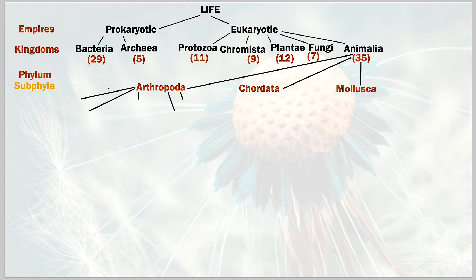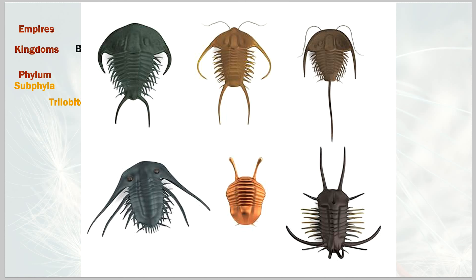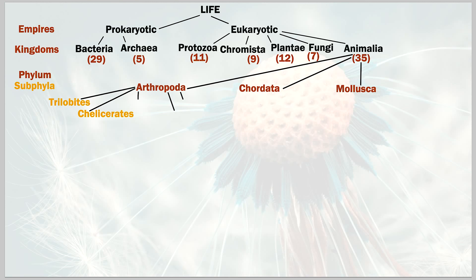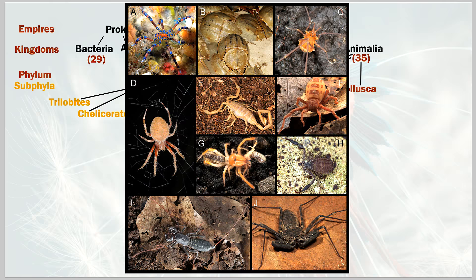Arthropods branch out into five sub-phyla. The first is trilobites — all extinct, mostly sea creatures. Then we have chelicerates, which you may never have heard of but have definitely seen — they contain arachnids, spiders, scorpions, and horseshoe crabs.